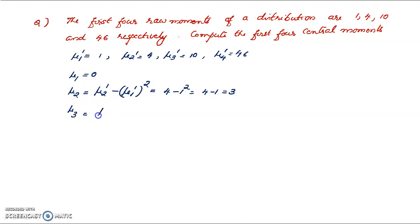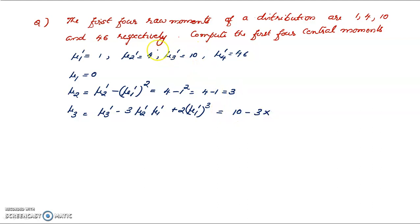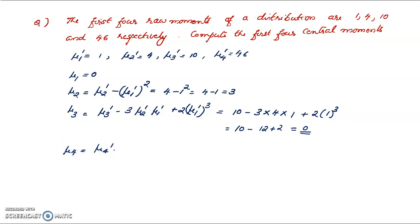Now mu3 is equal to mu3 dash minus 3 times mu2 dash times mu1 dash plus 2 times mu1 dash the whole cube. Substituting: 10 minus 3 into 4 into 1 plus 2 into 1 cube, that is 10 minus 12 plus 2, and the answer is 0.